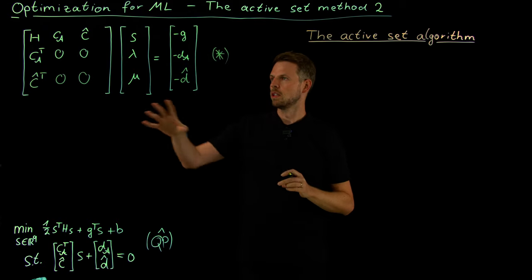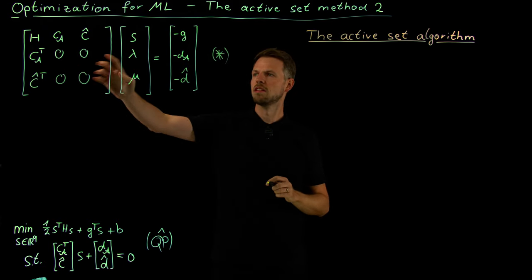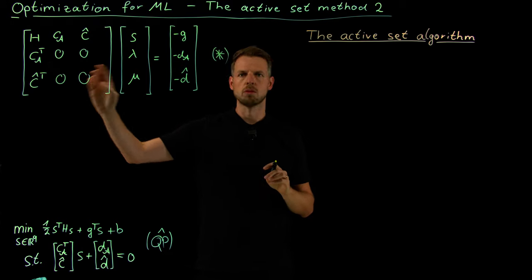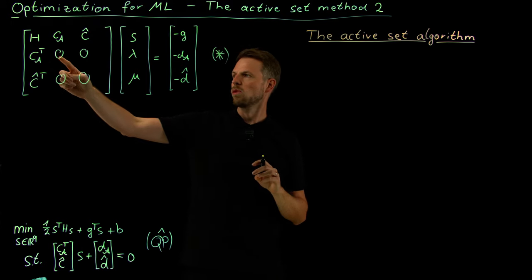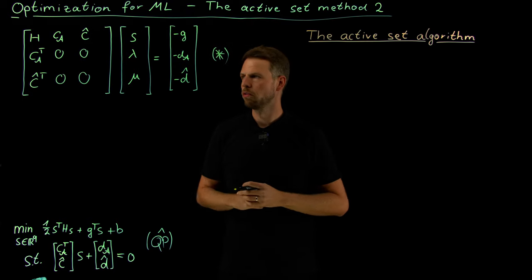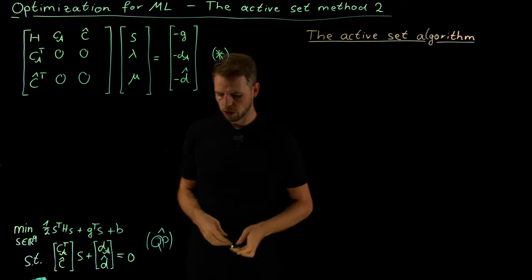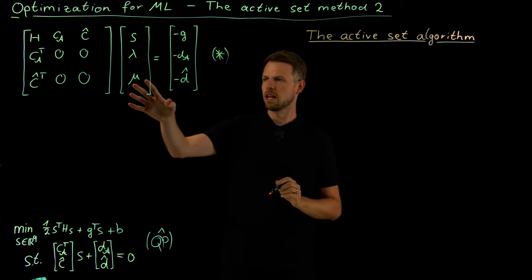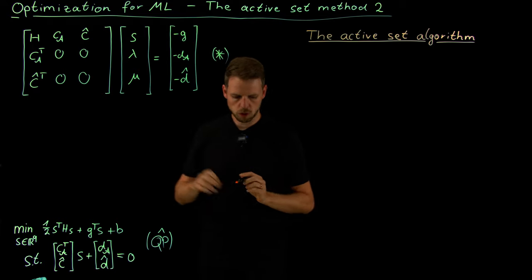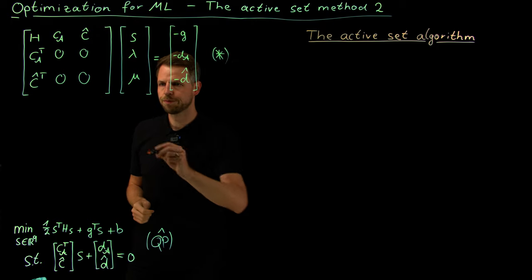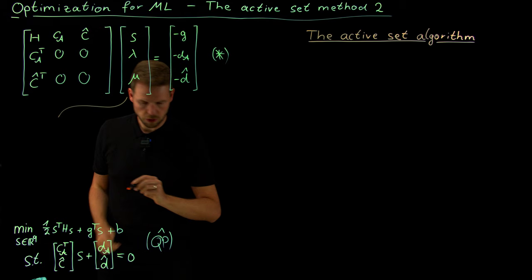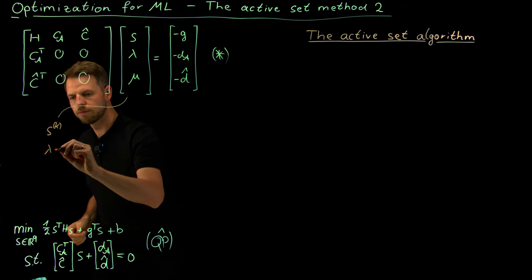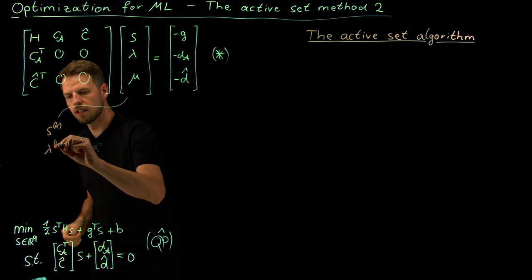We denote this combined system with a star, because we'll need it several times. This is a linear system which can be solved efficiently using linear system solvers rather than explicitly computing the inverse. For clarity, we relabel: s is our s in the k-th iteration, and the multipliers lambda and mu are in the k+1-th iteration.